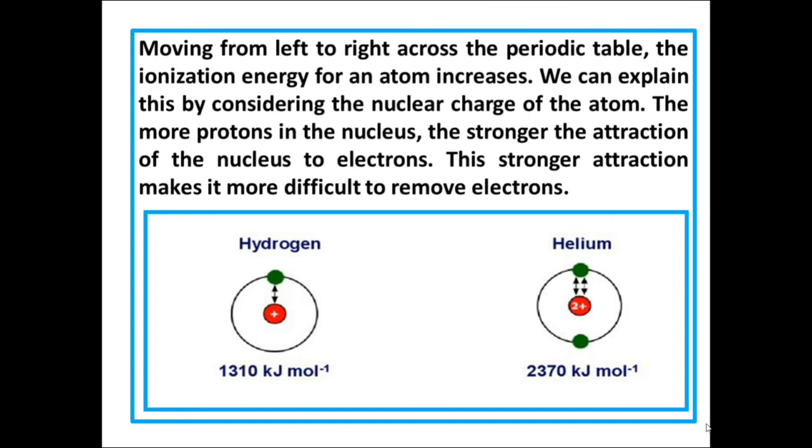Moving from left to right across the period in a periodic table, the ionization energy for an atom increases. We can explain this by considering the nuclear charge of the atom. The more protons in the nucleus, the stronger the attraction of the nucleus to electrons. This stronger attraction makes it more difficult to remove electrons.